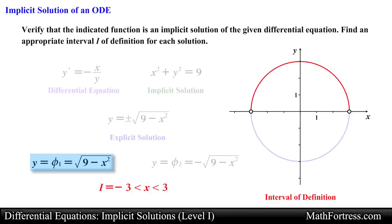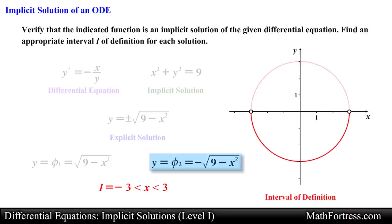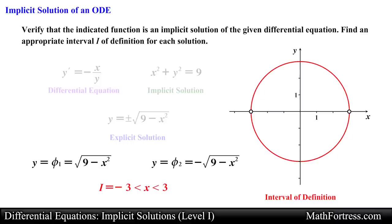As a result we have two options for our interval of definition. We can use the first explicit solution and define our interval of definition from negative 3 exclusive to positive 3 exclusive, or we can use the second explicit solution and define our interval of definition from negative 3 exclusive to positive 3 exclusive. Either of these intervals can be used as our interval of definition. In a much later video we will be required to choose one interval over the other; for now either of the explicit solutions along with their intervals are acceptable answers.